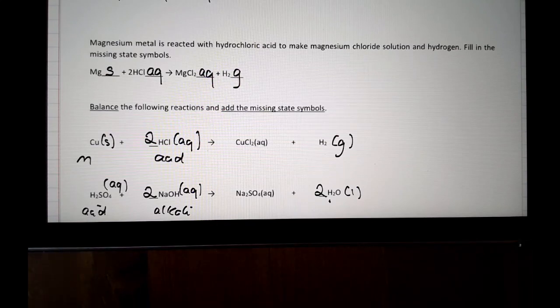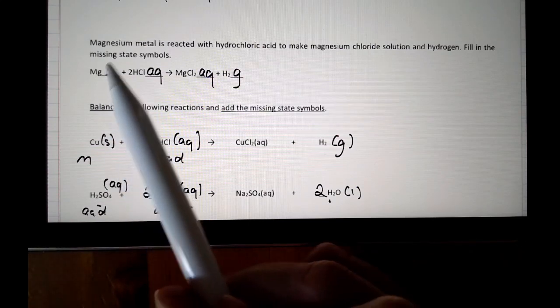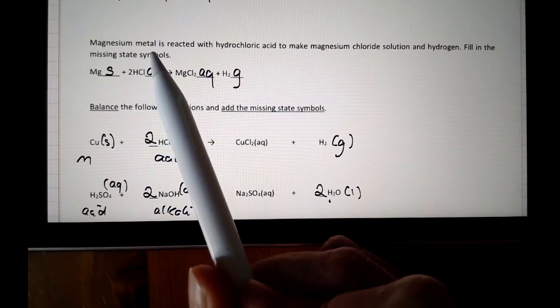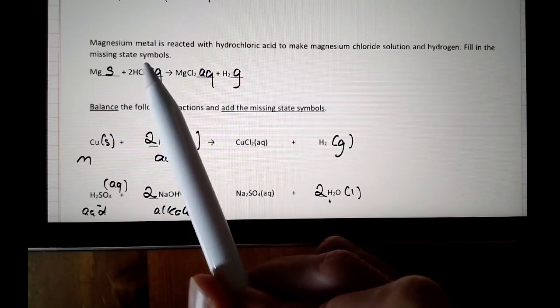For state symbols, you typically get one mark for adding the state symbols and another mark for completing the balancing — but they're really easy marks. Often they do tell you in the question what the state symbol should be; it's just a matter of putting in the letters.